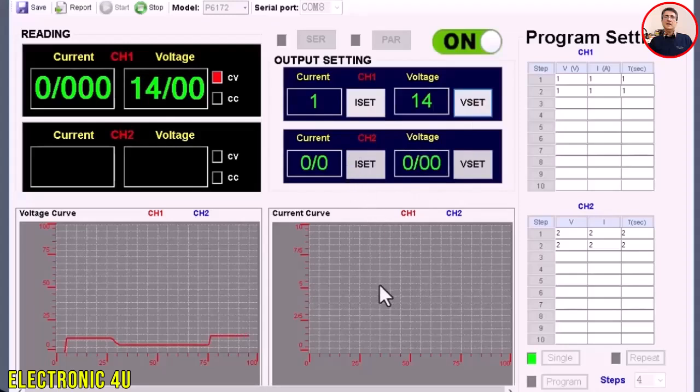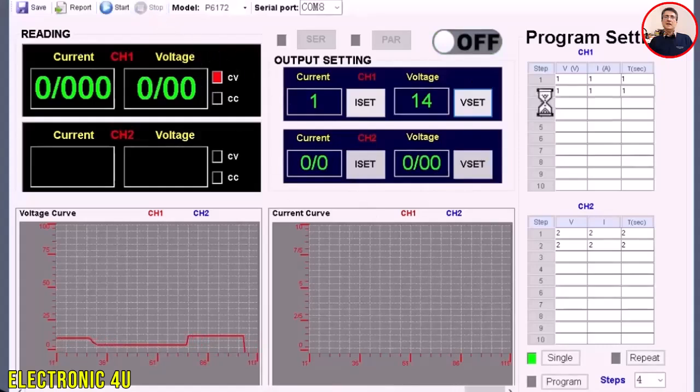Now we want to make a simple program for the device. First, press the On button to disconnect. The button will show Off. Then click the Stop button. On the right, there are two tables. We will work with table CH1. In the first column, we enter the voltage. In the second column, we enter the current. In the third column, we set the time that this voltage and current should stay on the output. We can set up to 10 steps.